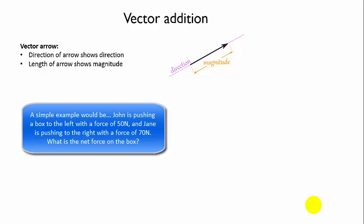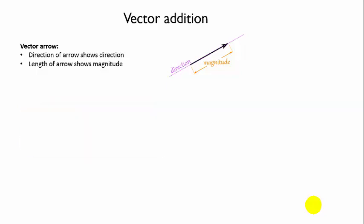We start by identifying individual vectors. A vector is represented by an arrow. The direction of the arrow shows the direction and the length of the arrow represents the magnitude of whatever the quantity is that you're looking at. If we're talking about forces, it's the magnitude of the force.